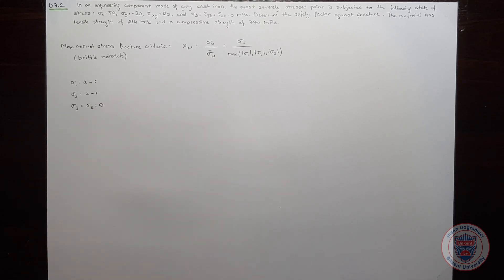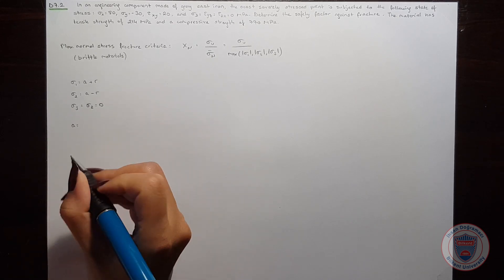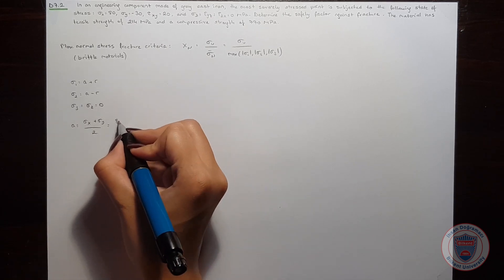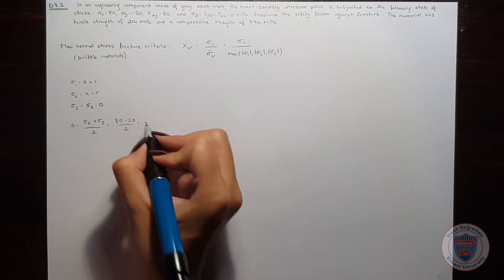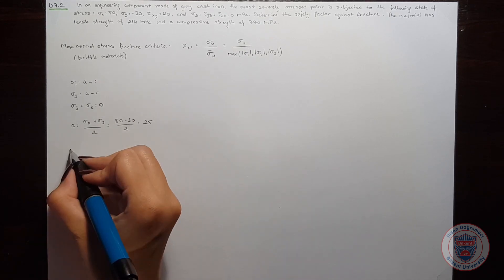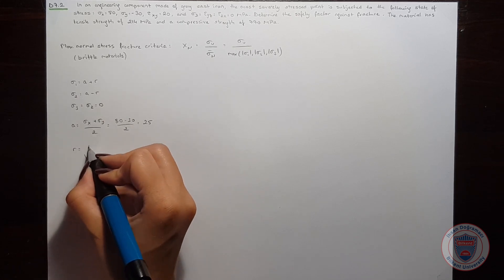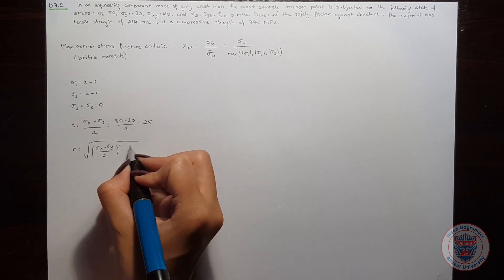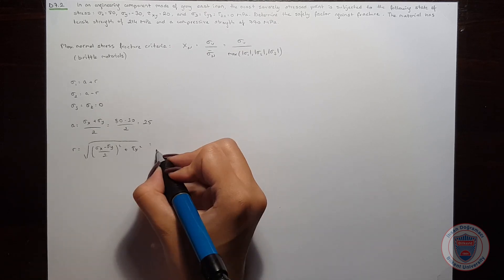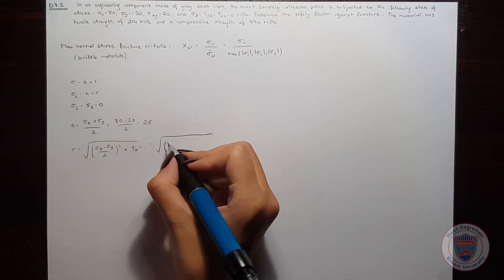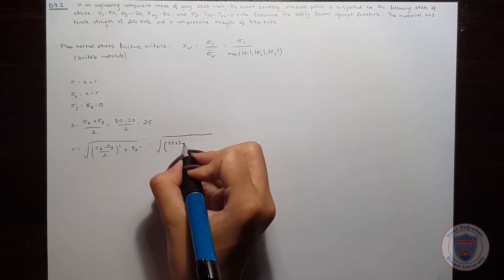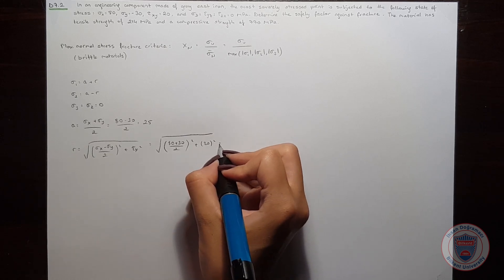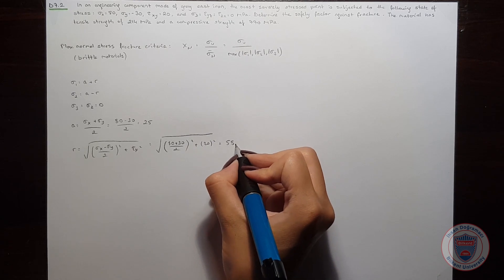So let's find a and r. A will be equal to sigma x plus sigma y over 2, and it is 25. And r is equal to square root of sigma x minus sigma y over 2 squared plus tau xy squared. I am substituting the values, and we got 58.52.